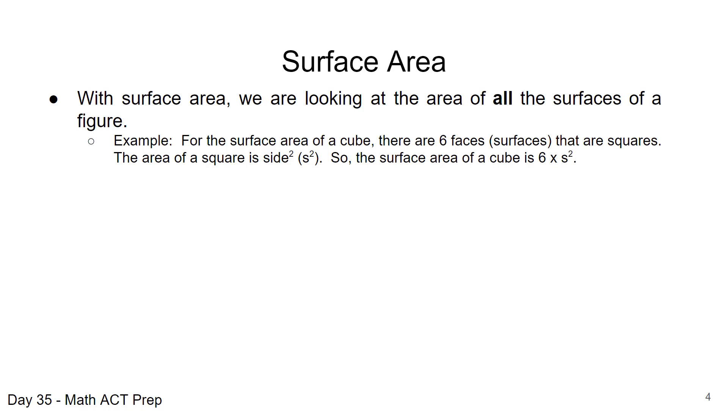For example, if we're talking about a cube, we know a cube has six faces or surfaces, and each of those faces is a square. So when we're looking for the surface area of the cube, we're going to be looking at the area of each side of that cube, which is the square. And the area of a square is side squared, or s squared.